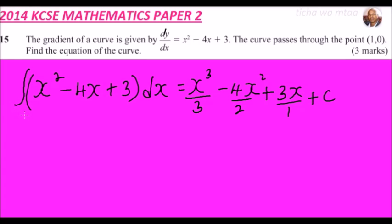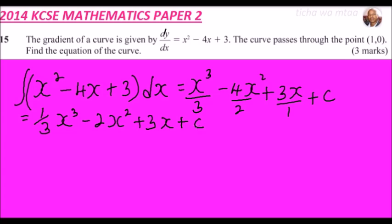So after integrating we can write y = (1/3)x³ - 2x² + 3x + c. That is the general function, with c as the constant of integration.